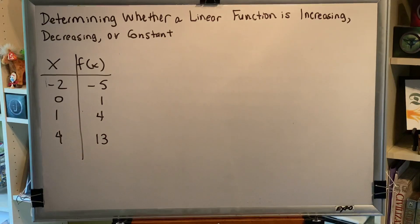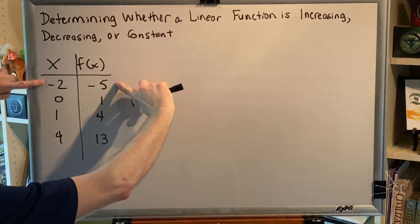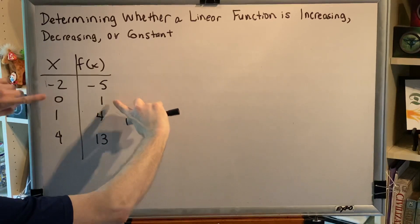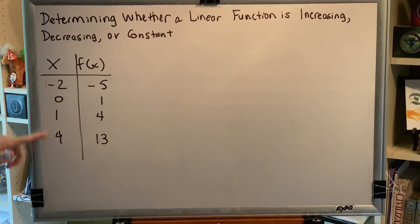The easiest method for this problem is to make sure that our points are in order of ascending x-coordinates, and we see that conveniently they are already in ascending order, looking just at the x values: negative 2, and then higher than that would be 0, and then higher than that would be 1, and then higher than that would be 4. They are ascending.